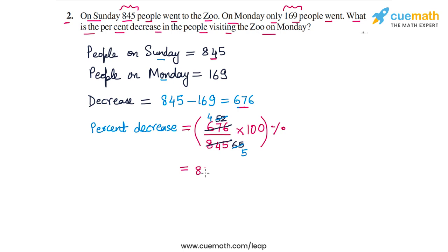So the percent decrease is 80 percent. The answer to this problem is that the percent decrease in the number of people visiting the zoo was 80 percent on Monday.